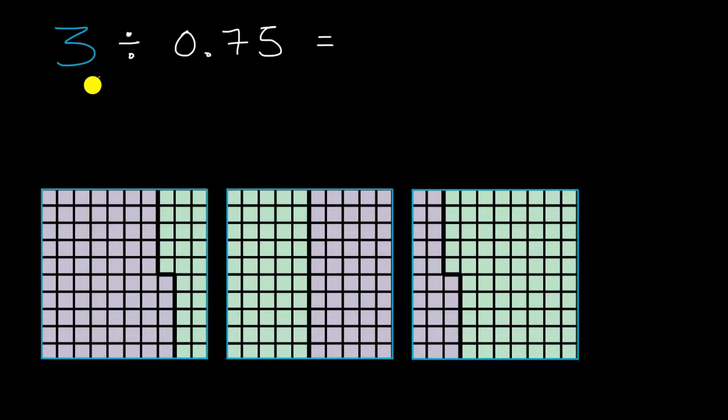And so we thought about these three wholes in terms of hundredths. And the way it's been color coded, it actually has already been divided into four equal groups of 75 hundredths. You can count these.